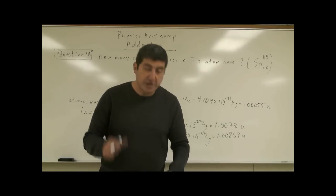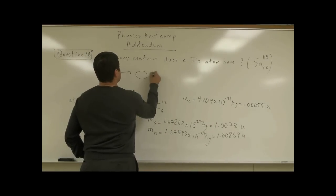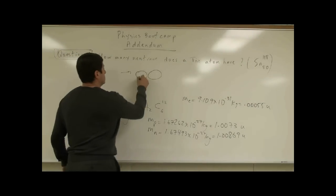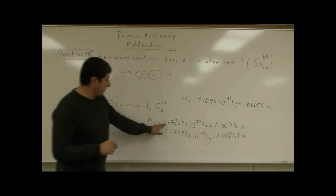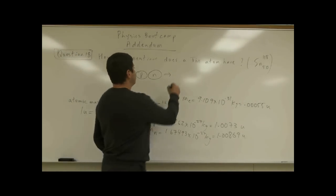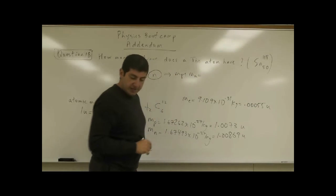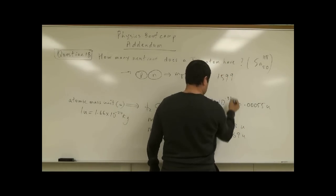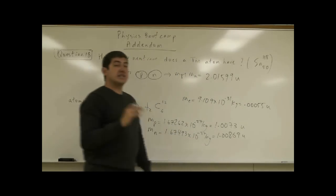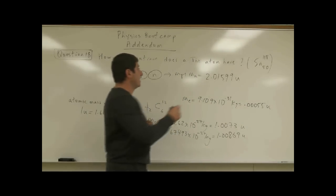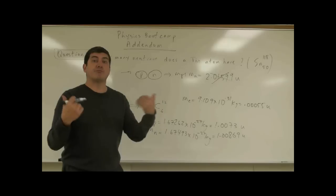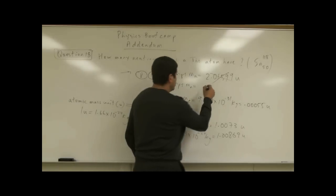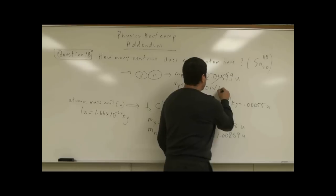What ends up happening is this: when the proton and neutron come together, you would think the combined mass would simply be the sum of the two. But it turns out the combined mass is actually less than that sum because of binding energy. So Mp + Mn actually turns out to be 2.01410 U, rather than the simple arithmetic sum.